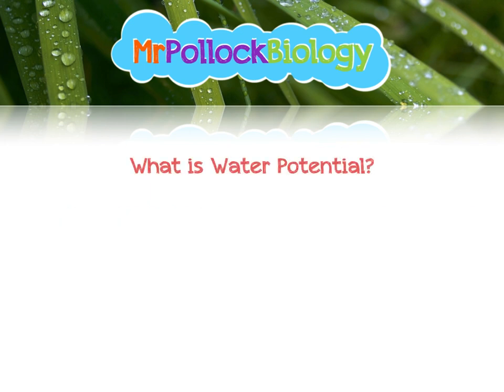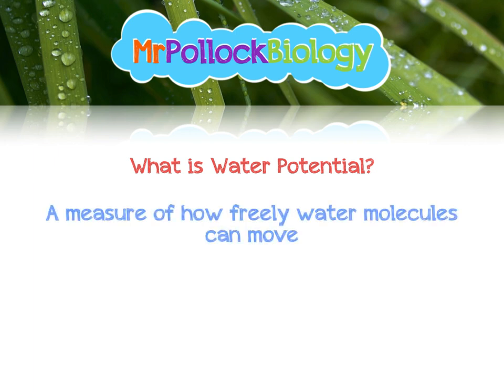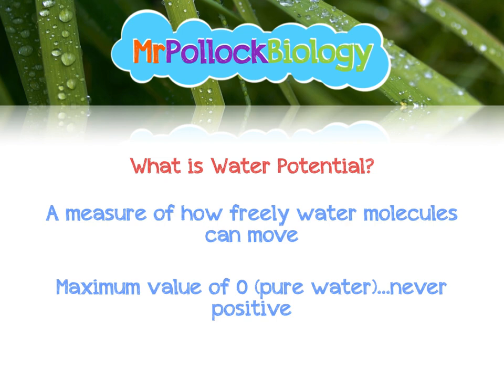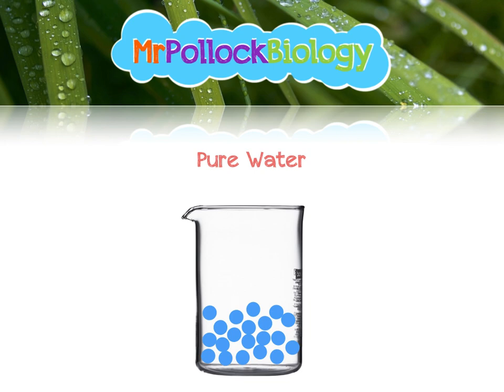So what is water potential? Basically, it's a measure of how freely water molecules can move. It has a maximum value of zero in pure water and it's never positive. It's measured in kilopascals. It's really a combination of solute potential and pressure potential that combine together to make this thing called water potential. Here's some pure water — it has a water potential, sometimes represented by the Greek letter psi, of zero kilopascals.